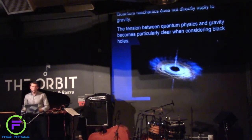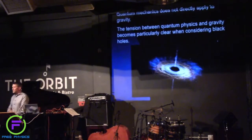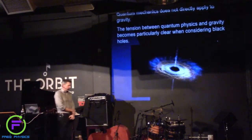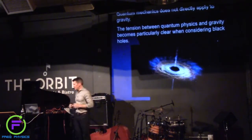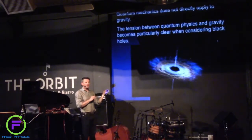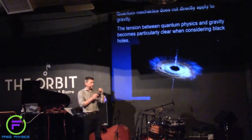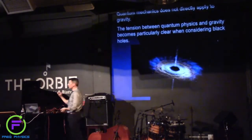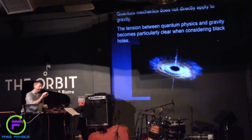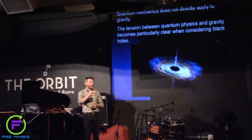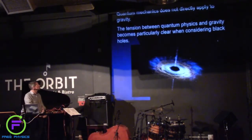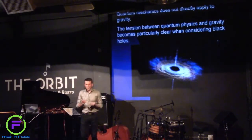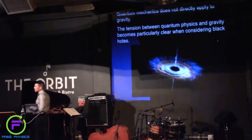Quantum mechanics does not apply directly to gravity. It's very difficult to reconcile quantum mechanics and gravity. A rough reason is that quantum mechanics is ultimately based on the idea that fundamental things are point particles — but in general relativity, putting a little bit of mass in a point, something infinitesimally small, will always produce a black hole, never a particle. This creates all kinds of problems when you combine the theories. The tension becomes particularly clear when one considers a black hole.